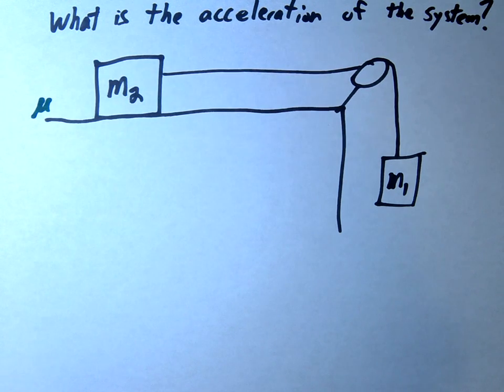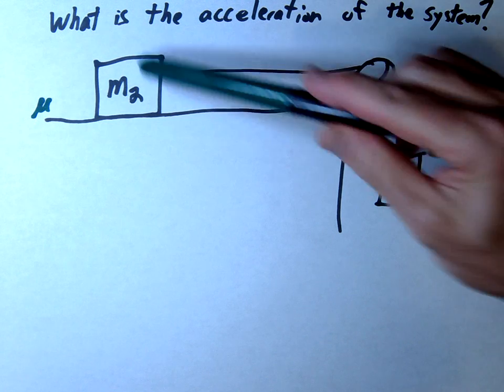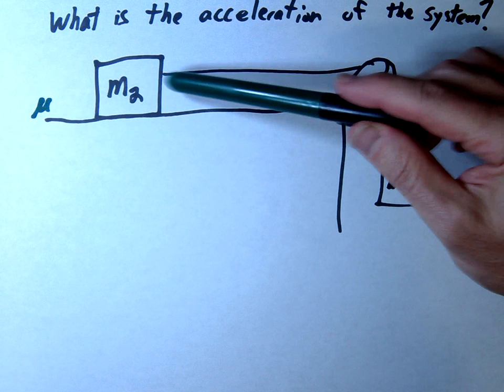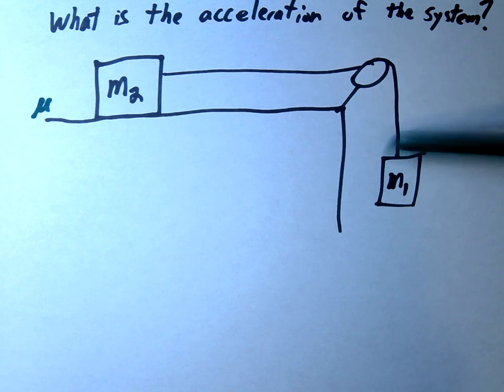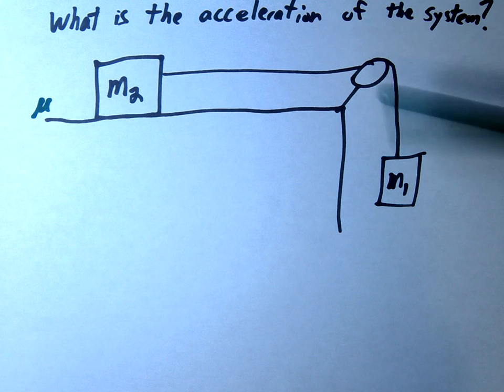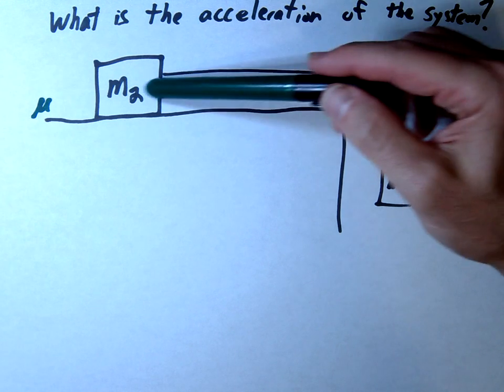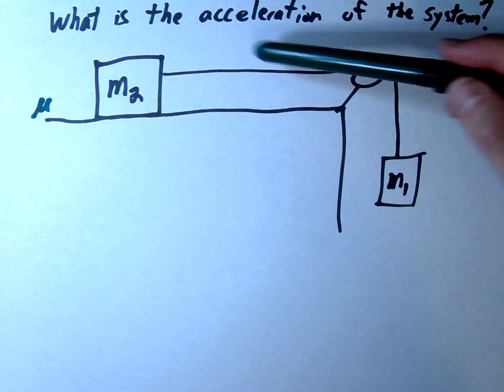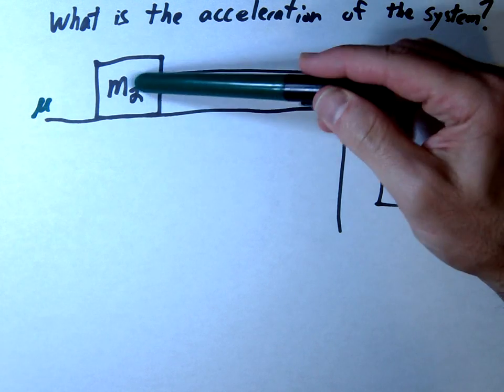In this problem, we have two masses attached by a string. One mass is sitting on a table, and the string goes around a pulley with the other mass hanging off the edge. When we let it go, the hanging mass will fall and the other mass will move horizontally. We're going to figure out the acceleration of the system and derive an equation using the provided variables.